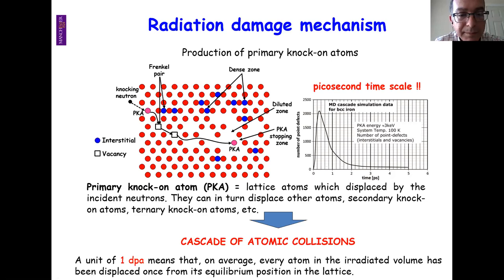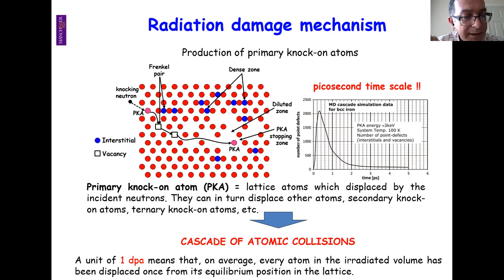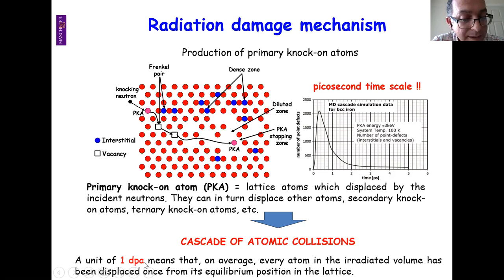What really matters for industrial applications is how those vacancies and interstitials evolve over time into larger dimensional defects — dislocation loops, voids, and stacking fault tetrahedra — because these are what truly affect nuclear material performance. In radiation damage we use units of DPA — displacements per atom. One DPA means that on average every atom in the irradiated volume has been displaced once from its equilibrium lattice position, so higher DPA means higher expected radiation damage.